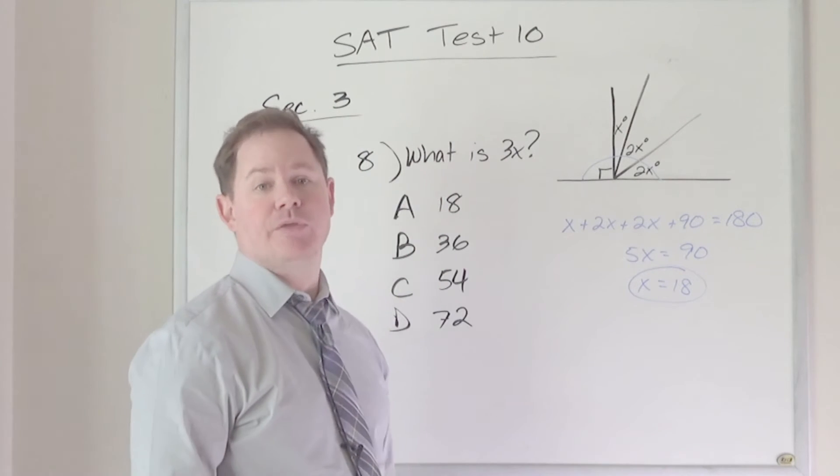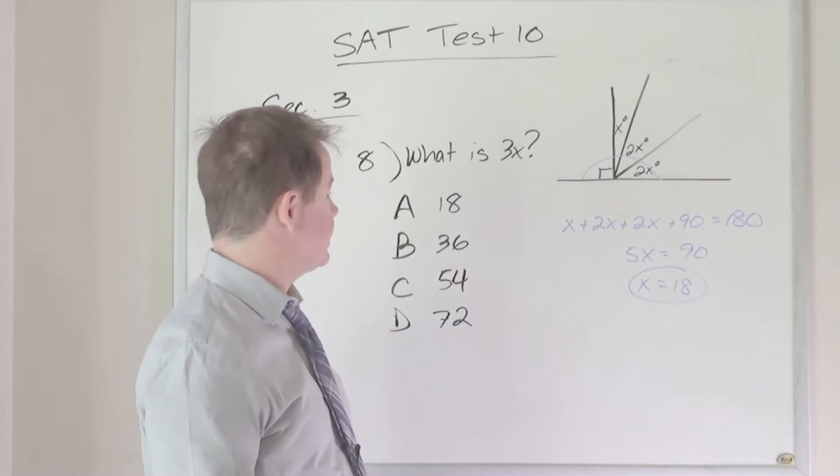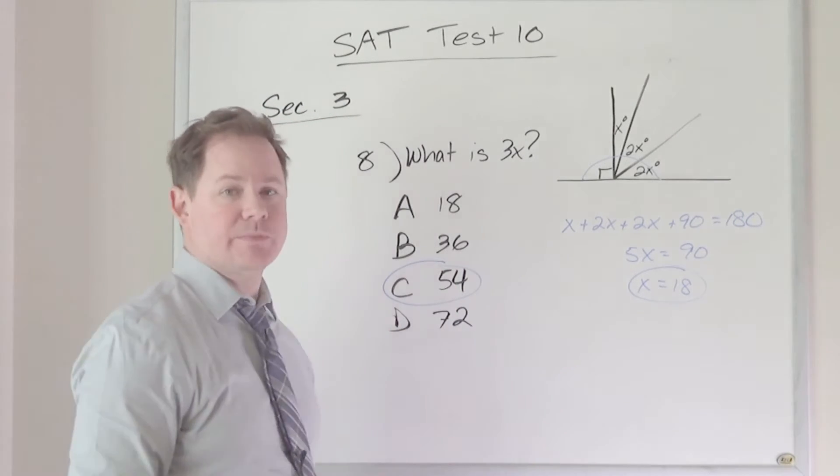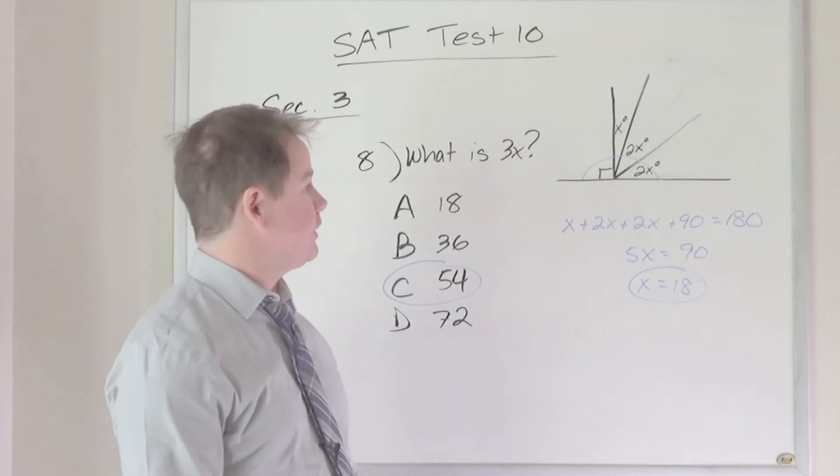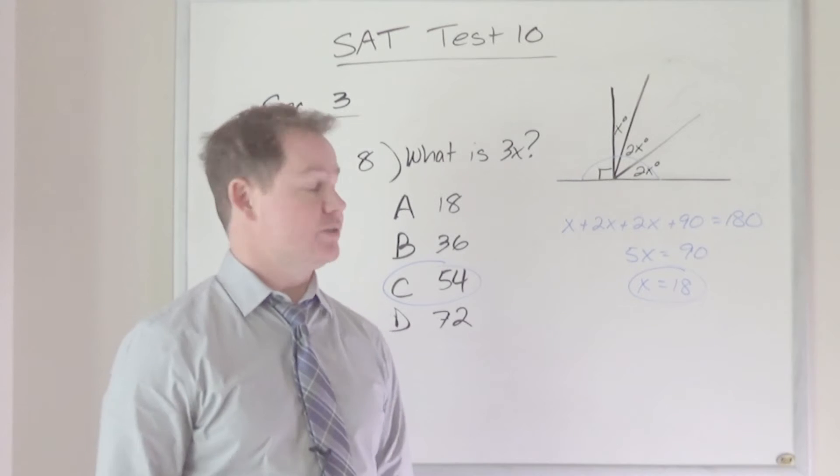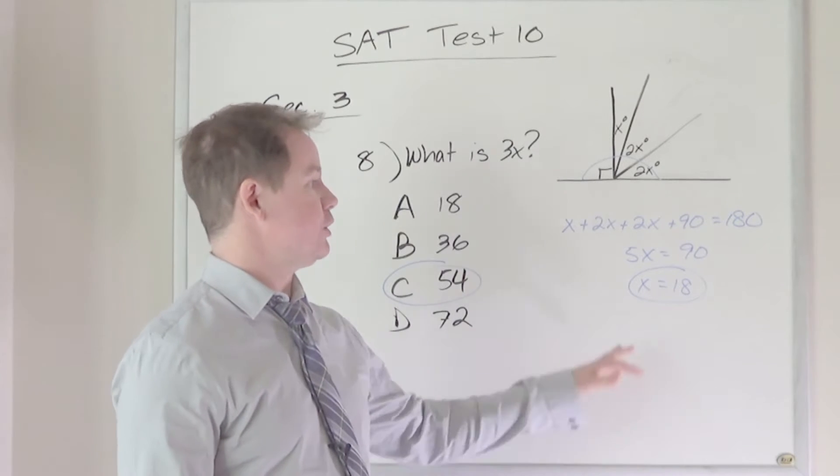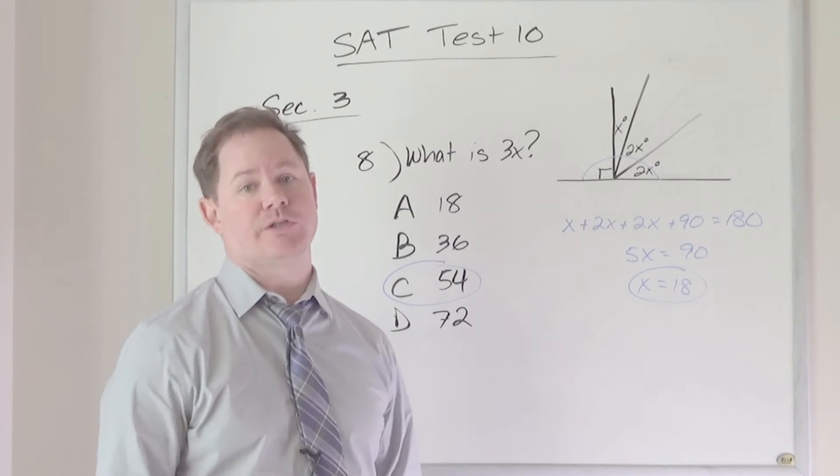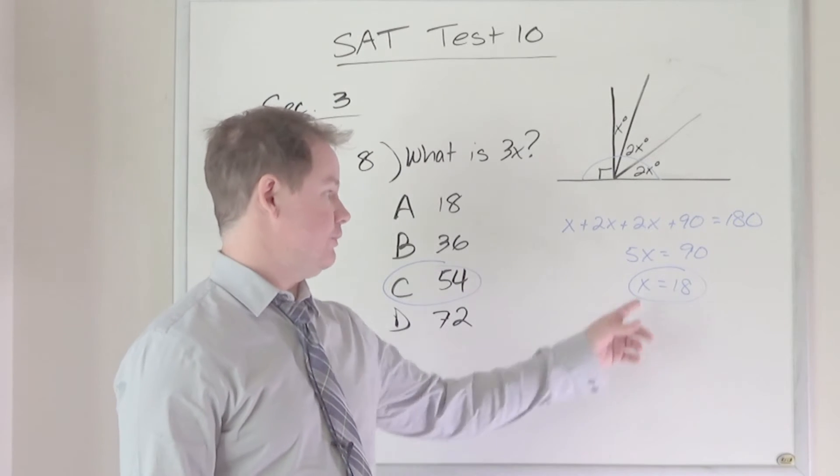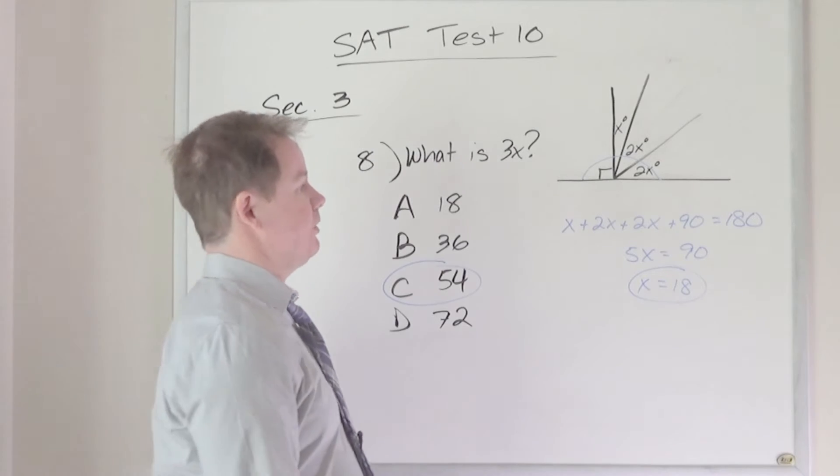And then if we're solving for 3x, we can multiply 18 times 3, and we get 54 as our answer. And that's great if we can set that up mathematically. Those are important things that we need to know for SAT. So I'm certainly not dissuading you from learning that the sum of those angles along a straight line has to be 180, or how to solve for a variable by combining like terms and isolating the variable.